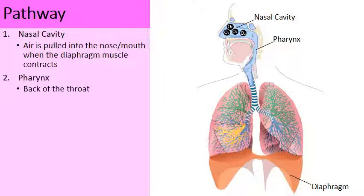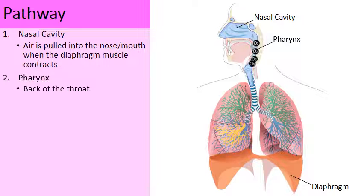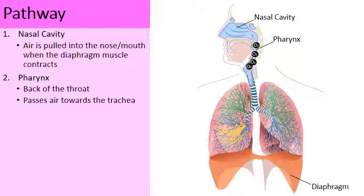Next we have the back of the throat known as the pharynx. This is also part of the digestive system, but we're focusing on the respiratory system today. The oxygen moves to the back of the throat — the pharynx — which connects to the blue tube called the trachea. The trachea will then take air into the two lungs.